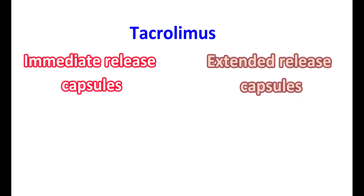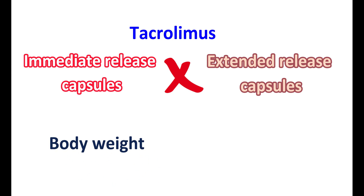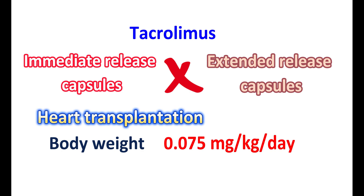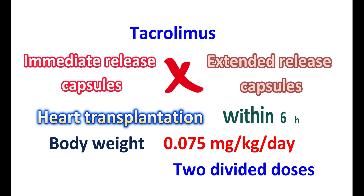How is it given: Tacrolimus is available as immediate-release capsules as well as extended-release capsules and tablets, and as an oral suspension. These formulations are not equivalent. The dose depends on body weight and the purpose of use. For heart transplantation, immediate-release capsules can be given as 0.075 mg per kilogram per day in two divided doses, administered within six hours after transplantation. Medication errors like exchanging extended-release and immediate-release tablets may lead to increased adverse reactions or decreased efficacy and graft rejection.